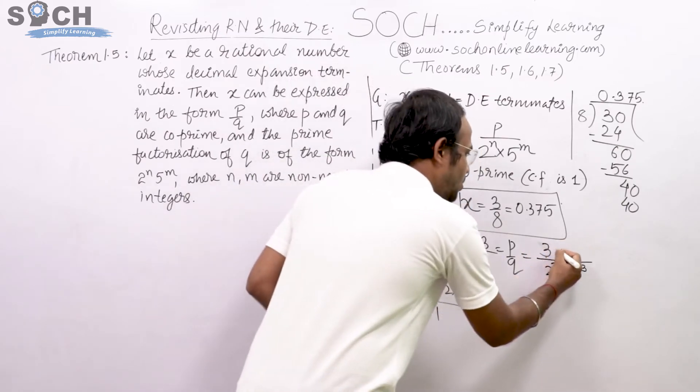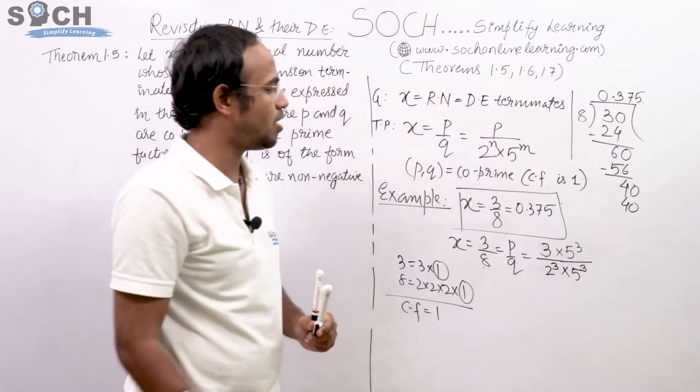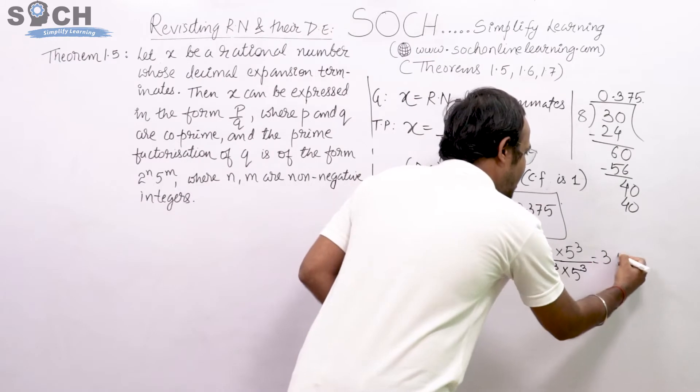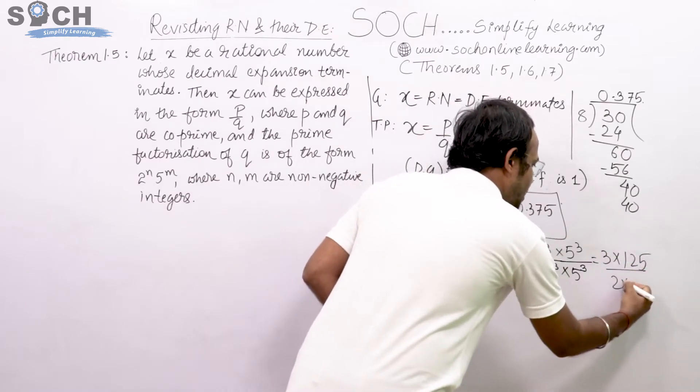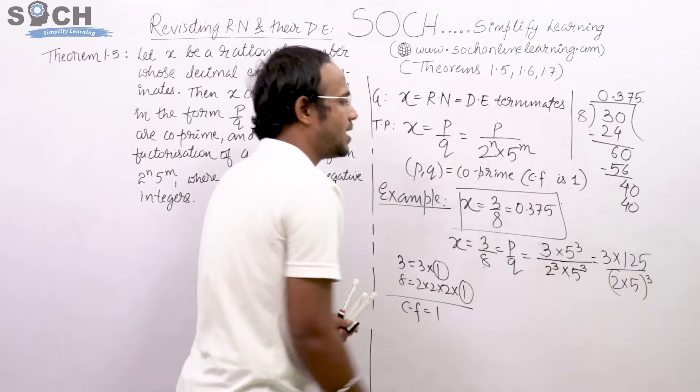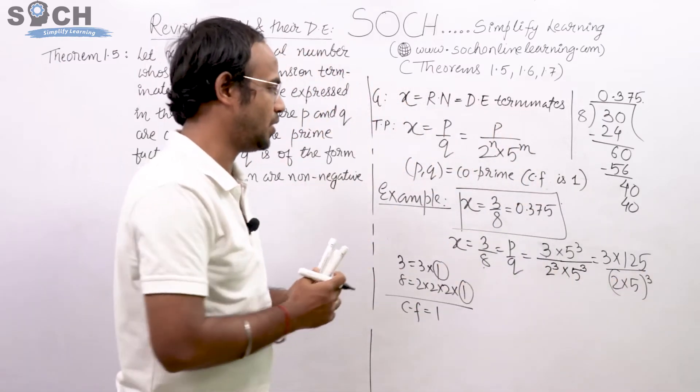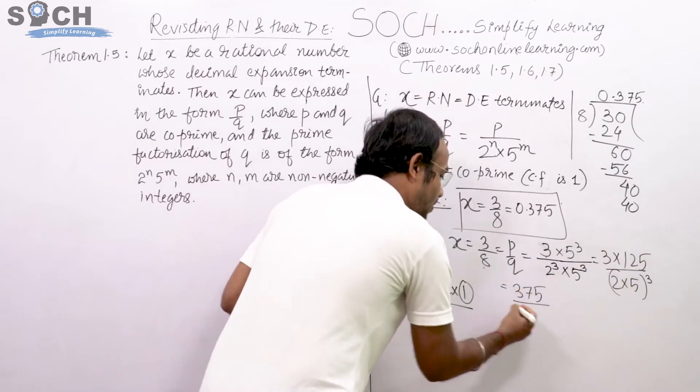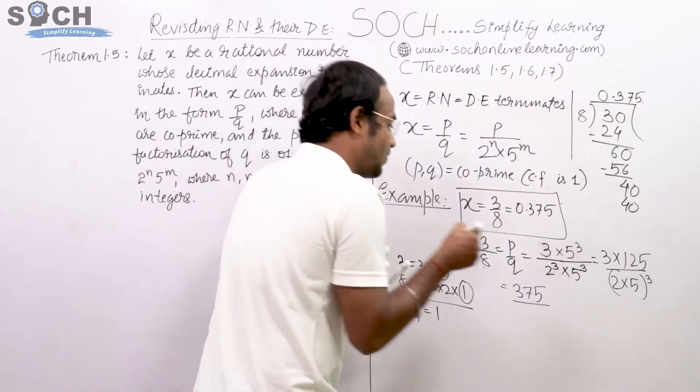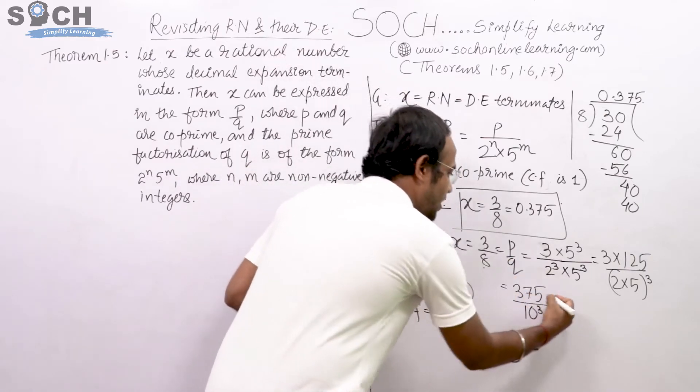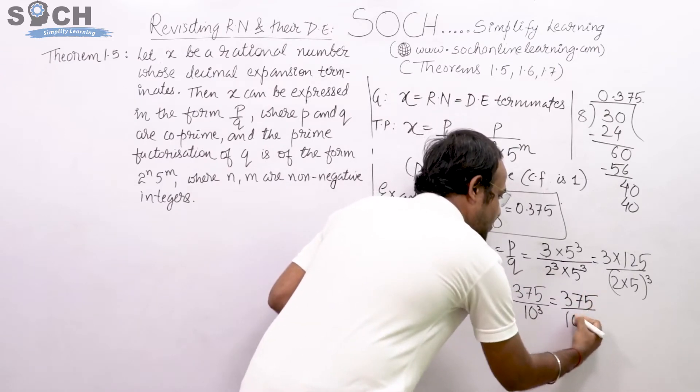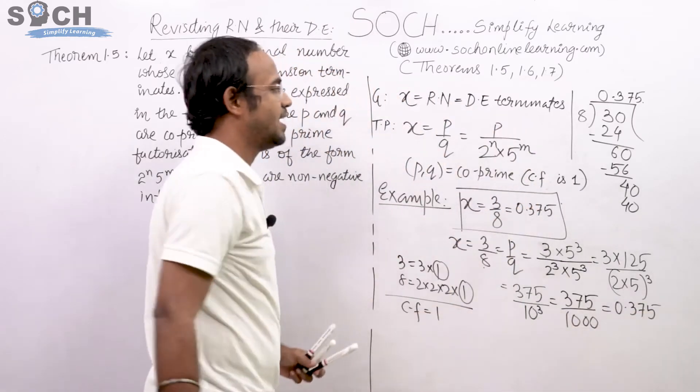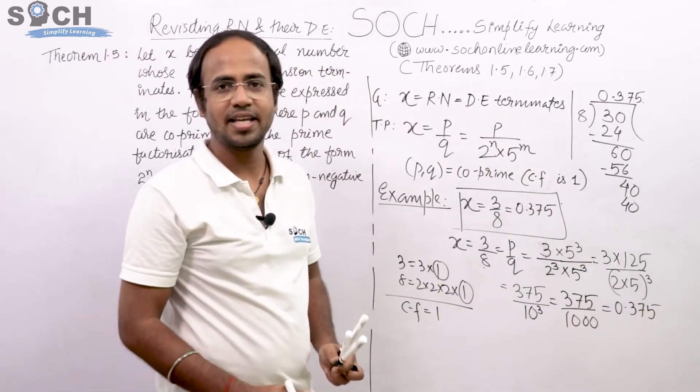I have to multiply by 5 raised to 3. Multiply numerator and denominator by 5 raised to 3. Therefore we get 3 into 125 whole upon 2 into 5 raised to 3, which is AB raised to M. Therefore finally 3 into 125 is 375 upon 1000 which comes out to be 0.375. So this is how the whole theorem gets verified.